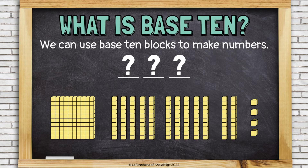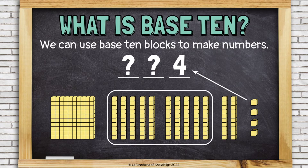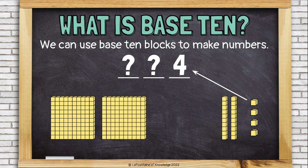Let's try another. This time I have 4 ones blocks and 12 tens blocks. Hmm — that's not right. I can only put one digit in each of these places; I can't put a 12 in the tens place. Let's try that again — I'll have to regroup. Here I see 10 tens, and I know that 10 tens is actually 100. Let's group these 10 tens blocks together to make a new hundreds block. Now I only have two tens and I have two hundreds. This shows the number 224.